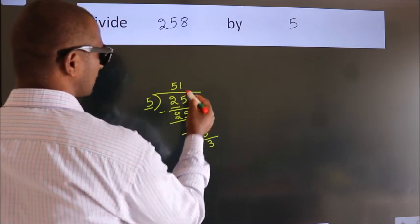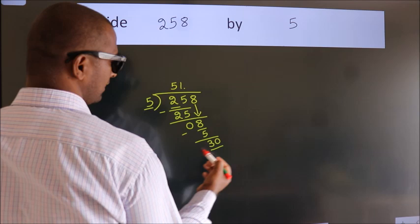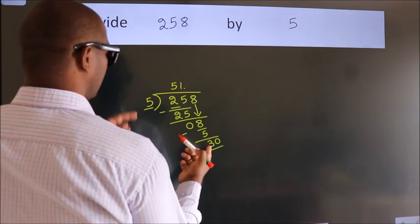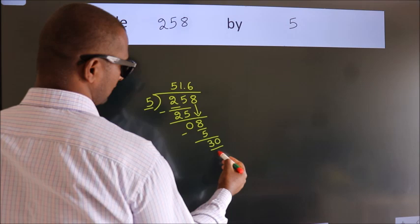So what we do is we put a dot and take 0. So 30. When do we get 30? In the 5 table. 5 sixes, 30.